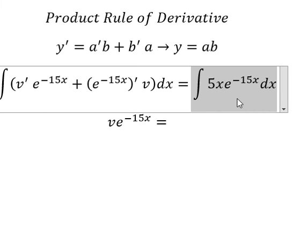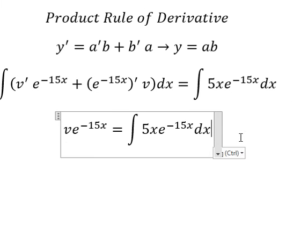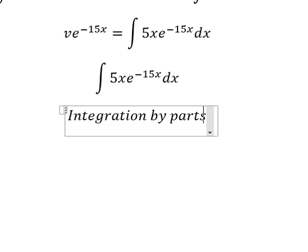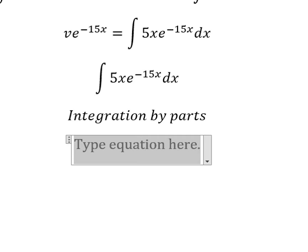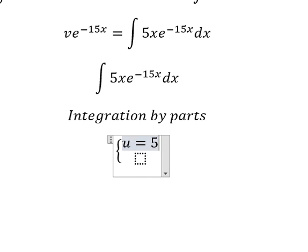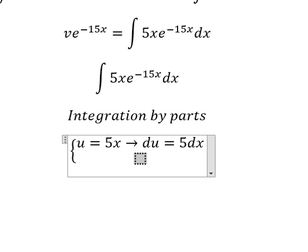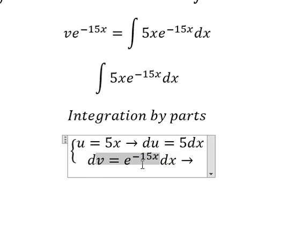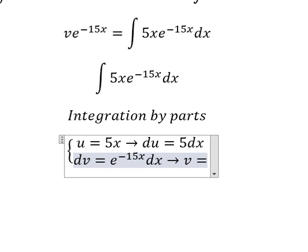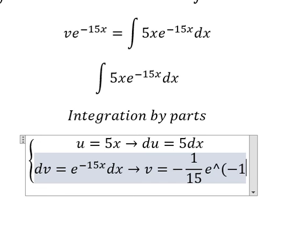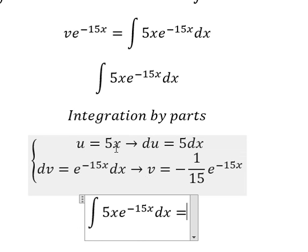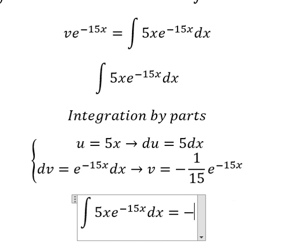Now we just concentrate about this one only. We can use integration by parts. So I will put u equals to 5x. After that, we do the first derivative of both sides. And we have du equals to 5 dx, and dv equals e to the power of negative 15x dx. So we have v equals e to the power of negative 15x over negative 15, which gives us negative 1 over 3.